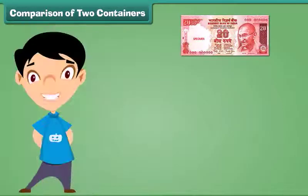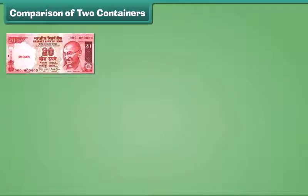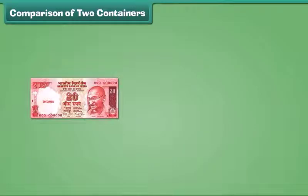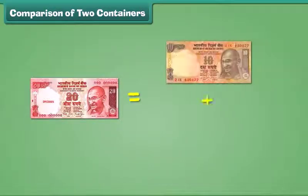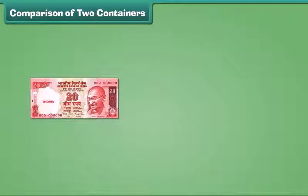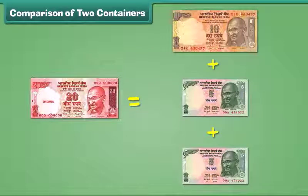This is a 20 rupee note. A 20 rupees note is equal to the sum of 4 five-rupee notes. A 20 rupees note is equal to the sum of 2 ten-rupee notes. A 20 rupees note is also equal to the sum of 1 ten-rupee note and 2 five-rupee notes.